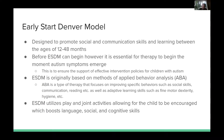Referring back to the importance of diagnosing individuals at a young age, the Early Start Denver Model (ESDM) is an example of a therapy that has proven to yield results in children who show symptoms of autism. The purpose of ESDM is to promote social and communication skills and learning between the ages of 12 and 48 months. It is essential for therapy to begin the moment autism symptoms emerge to ensure effective early intervention. ESDM is originally based on ABA — Applied Behavior Analysis — which focuses on improving specific behaviors such as social skills, communication, and reading, as well as adaptive learning skills like fine motor dexterity and hygiene. What makes ESDM different is its utilization of play and joint activities, which allow the patient to feel encouraged, promoting language, social, and cognitive skills.